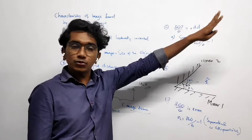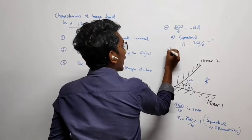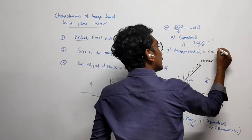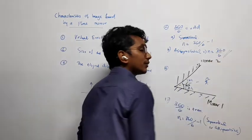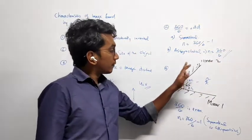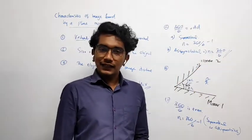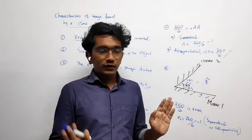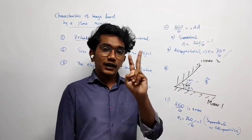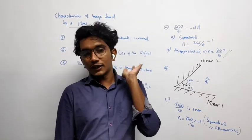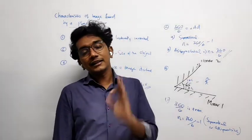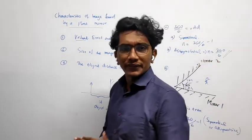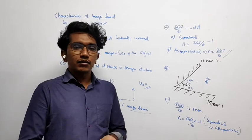Case 2: If 360 divided by theta is odd, there are two sub-cases. If the object is placed symmetrically — meaning it is at equal angles from both mirrors — then n = (360/θ) − 1. If the object is placed asymmetrically, then n = 360/θ. These are the important properties of plane mirrors, and you can expect one or two questions from them. Thank you everyone.